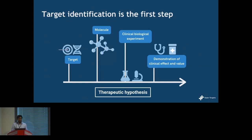The first step in the classic drug discovery process is to select a target. This could be either a gene or a protein whose modulation we hypothesize will benefit patients. Once we have the target in mind, we start to create and test drug candidates that will perform the modulation selectively. We think in terms of a therapeutic hypothesis — for example, modulating this target will benefit this disease. Target selection is what kickstarts this whole process.